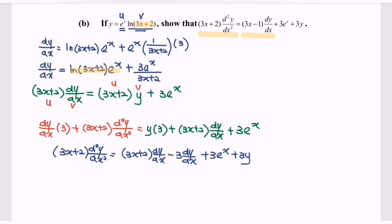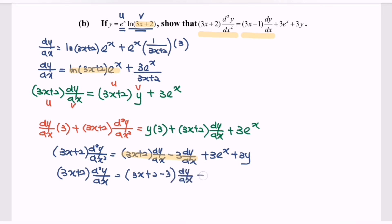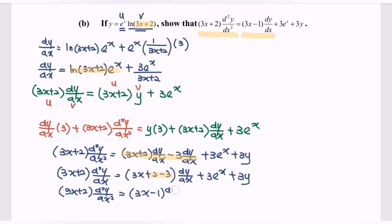Plus 3y. Simplifying and factoring out dy/dx, we get (3x plus 2) times the second derivative equals (3x plus 2 minus 3) times dy/dx, plus 3eˣ plus 3y. So finally, (3x plus 2) times the second derivative equals (3x minus 1) times dy/dx, plus 3eˣ plus 3y.